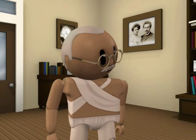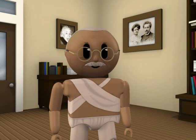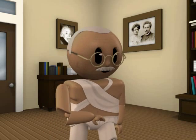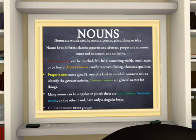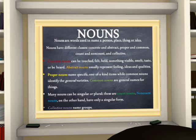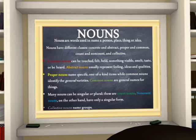I believe that concludes our great demonstration on nouns. Let us go back and review the classifications. Nouns are words used to name a person, place, thing, or idea. Concrete nouns can be experienced with your five senses. Abstract nouns usually represent feelings, ideas, and qualities. Proper nouns name specific, one-of-a-kind items, while common nouns identify the general varieties. Nouns that can be singular or plural are count nouns. Non-count nouns have only a singular form. Collective nouns name groups.